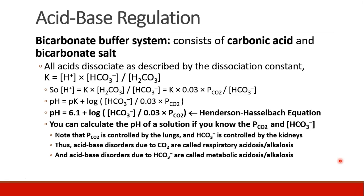The important take-home point here is that your lungs control your PCO2, and your kidneys control your bicarbonate ion concentration. So when you have an acid-base disorder that's due to CO2, we call it a respiratory acidosis or alkalosis. When it's due to your bicarbonate ions, it's called a metabolic acidosis or alkalosis.